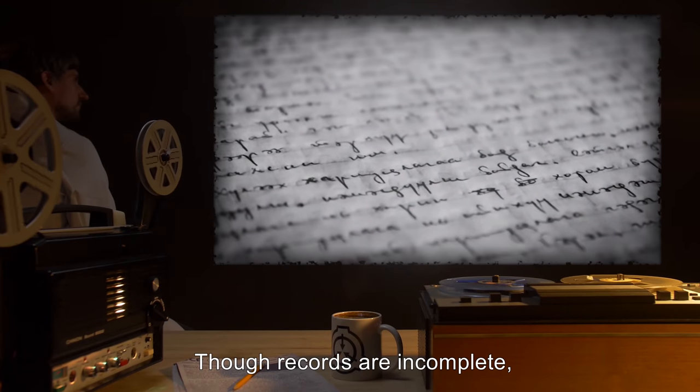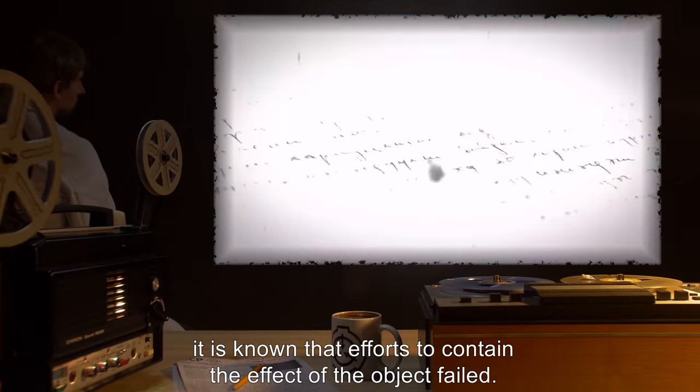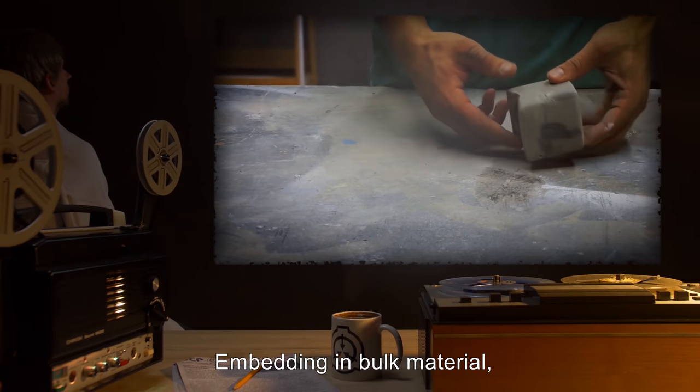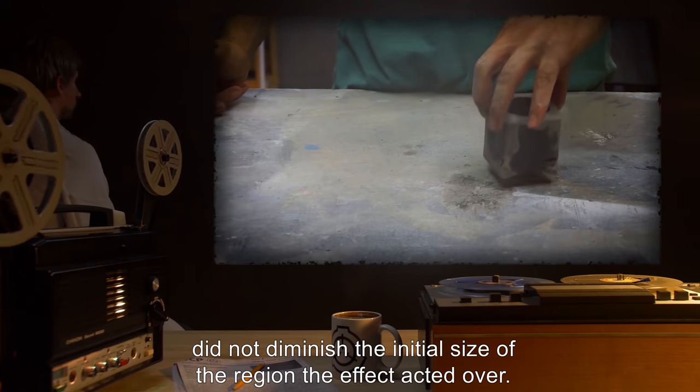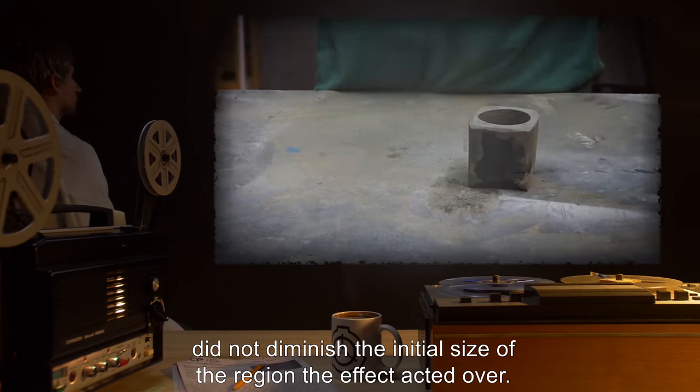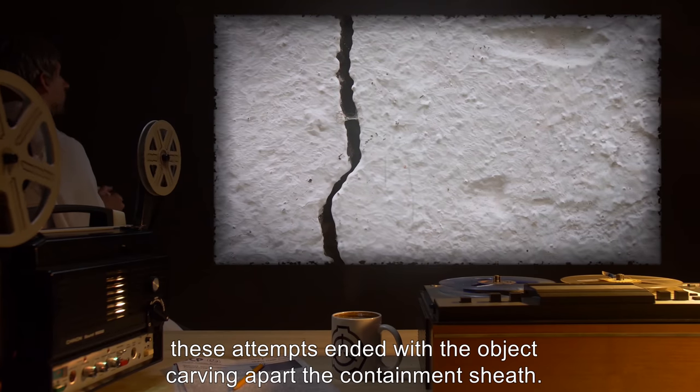Though records are incomplete, it is known that efforts to contain the effect of the object failed. Embedding in bulk material, such as concrete or lead, did not diminish the initial size of the region the effect acted over. Further, these attempts ended with the object carving apart the containment sheath.